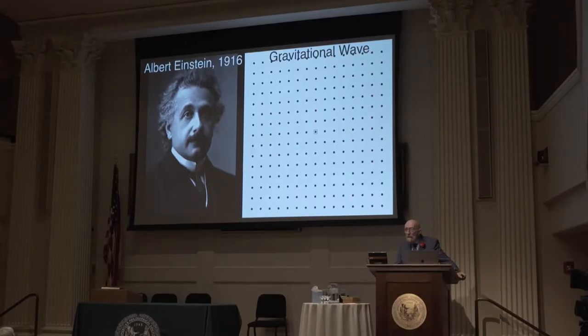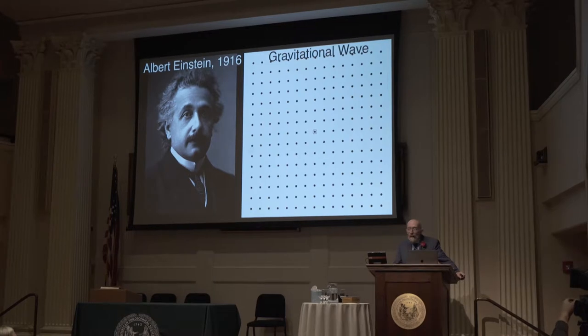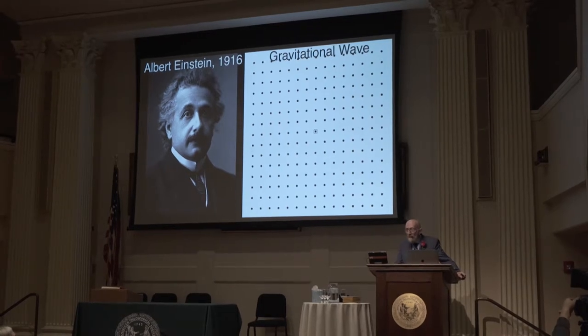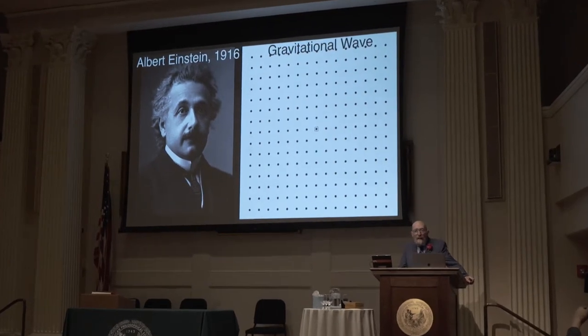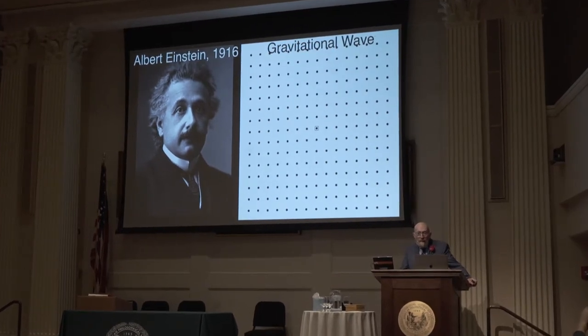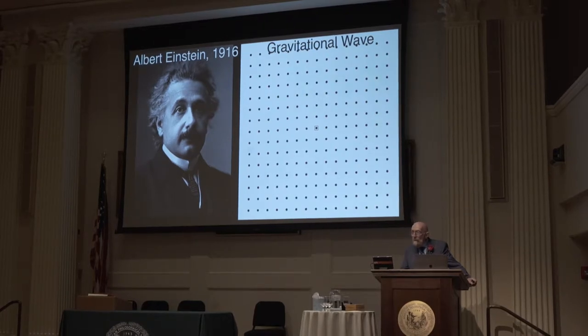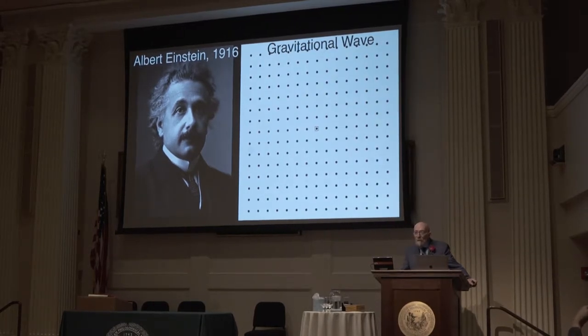I'm going to begin, of course, with Albert Einstein. In 1915, he told us that space and time are warped by mass and by energy, and in 1916, he used his general theory of relativity, which described and predicted that warping, to also predict the existence of gravitational waves.